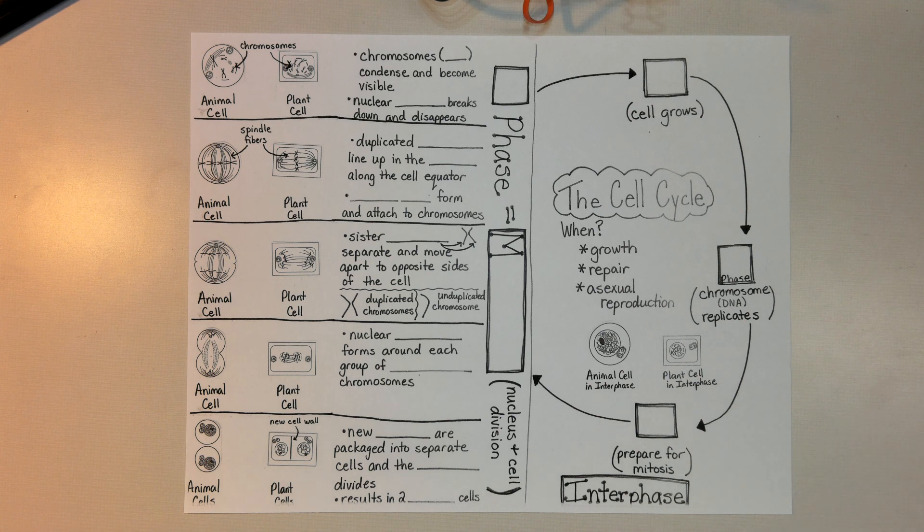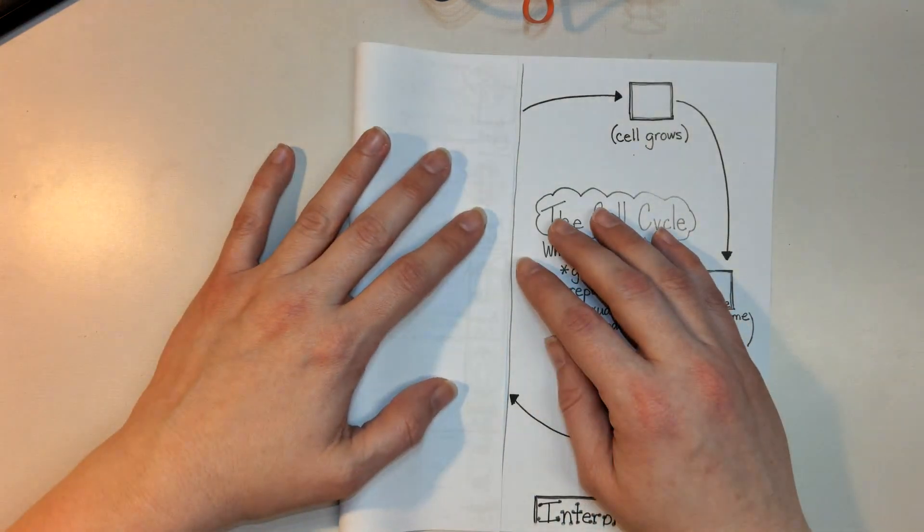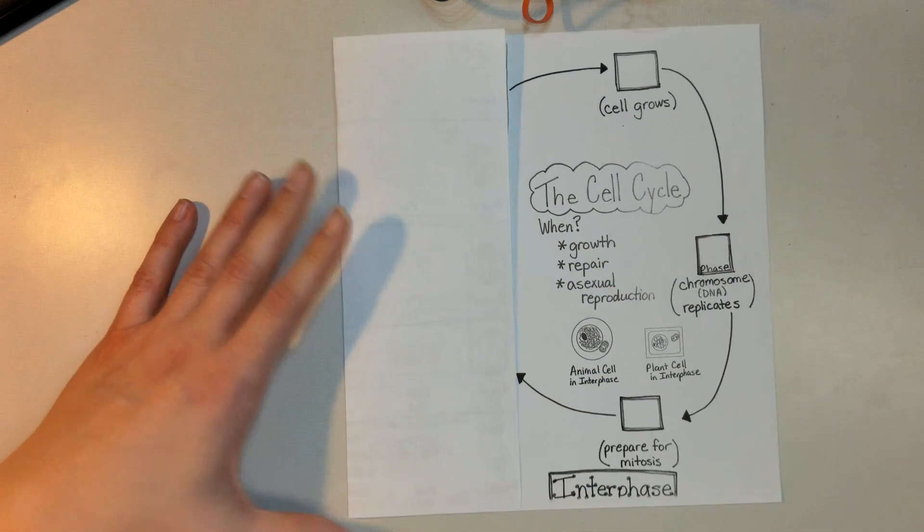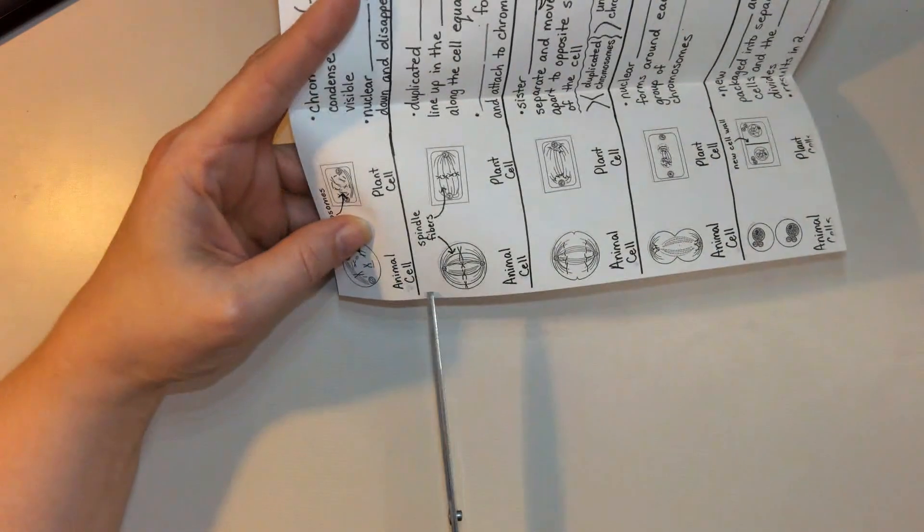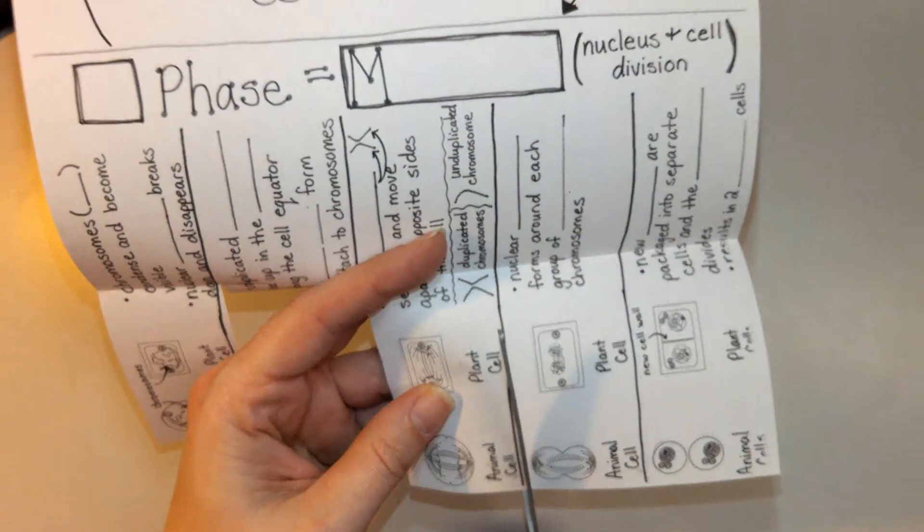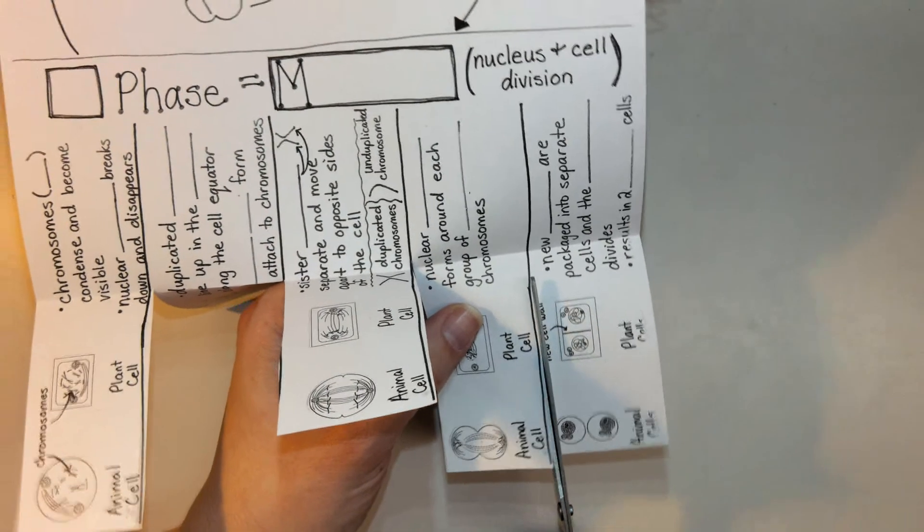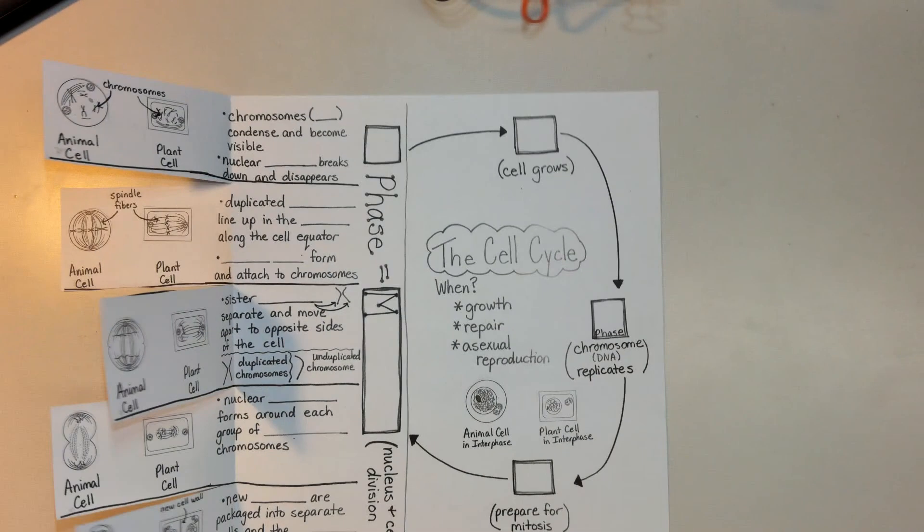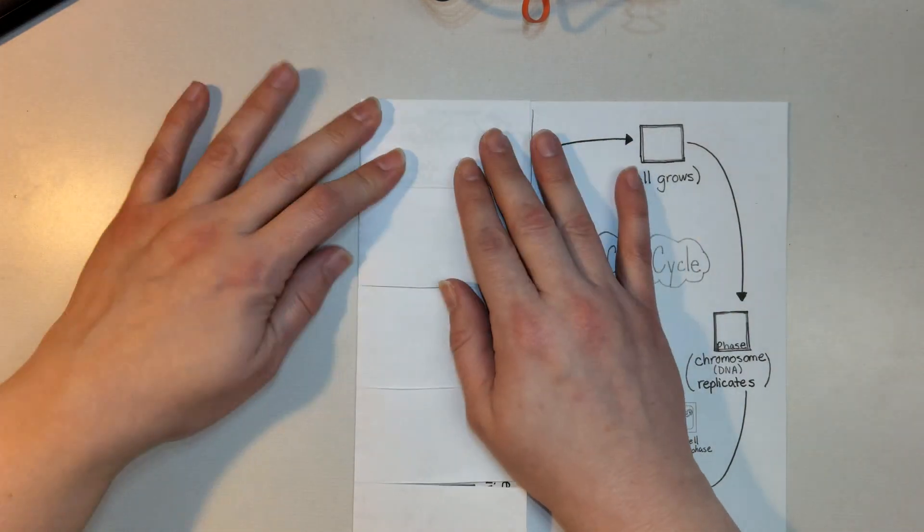First step we're going to need to do on this foldable is we're going to take the left side of the foldable. We're going to fold it to this line right here that's running vertically. Then we're going to need a pair of scissors. We're going to open up the foldable, and we are going to cut from the edge along these lines as straight as we can to the fold, just like so. So this foldable is going to have five segments over here on the left.